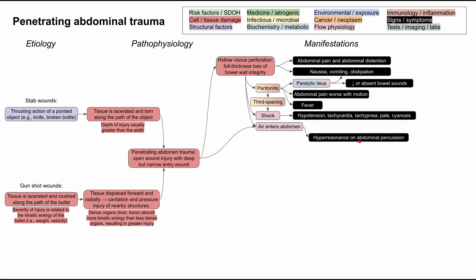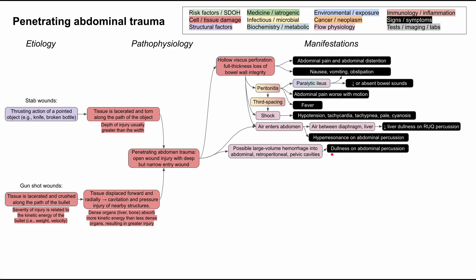When air enters the abdomen, you'll have hyper resonance on abdominal percussion. If there is more air in the abdomen than usual, it will sound very hollow. One example: if air gets between the diaphragm and the liver, you'll have a decrease in liver dullness on right upper quadrant percussion — normally the liver is more dull, so decreased dullness suggests air between the diaphragm and the liver. In contrast, if you have blood in the abdomen, you can have extra dullness on percussion, since blood is much more dense than air.